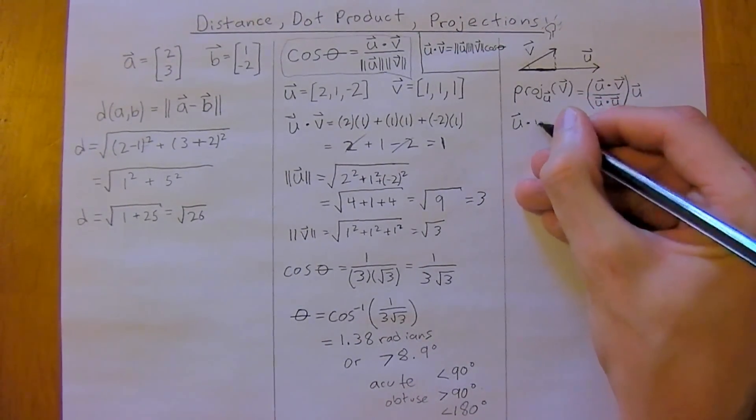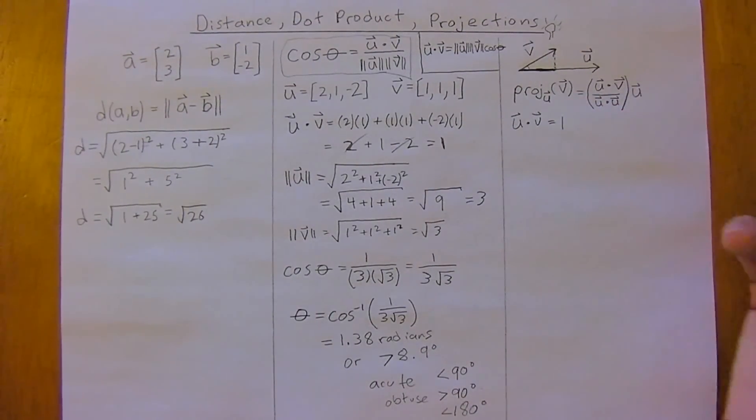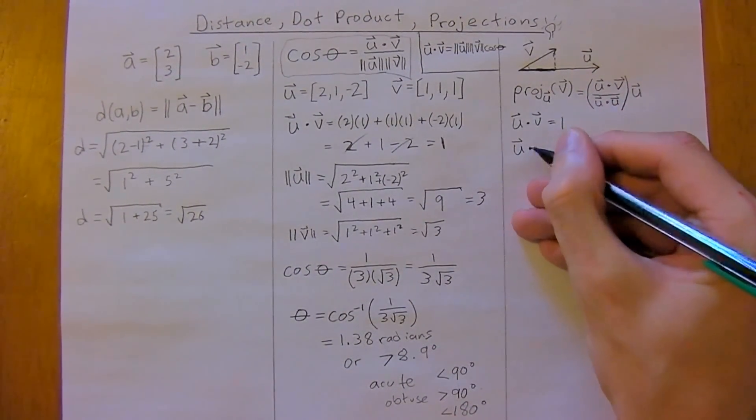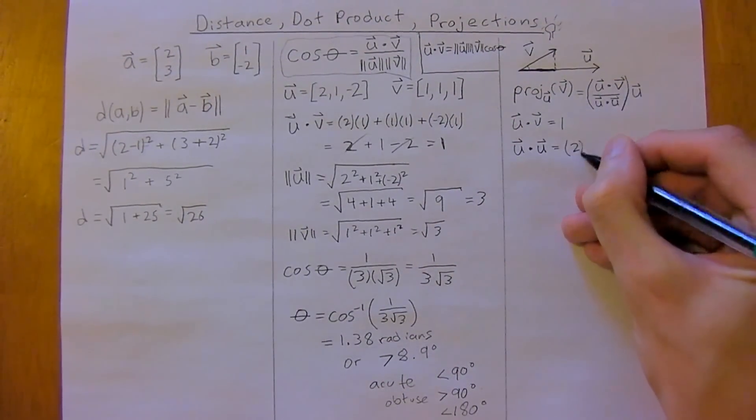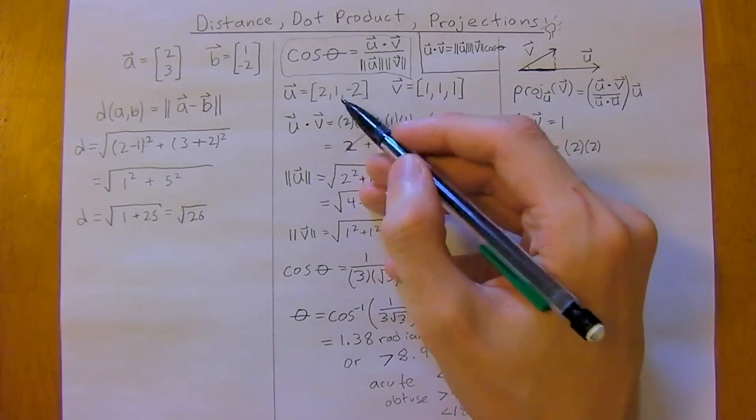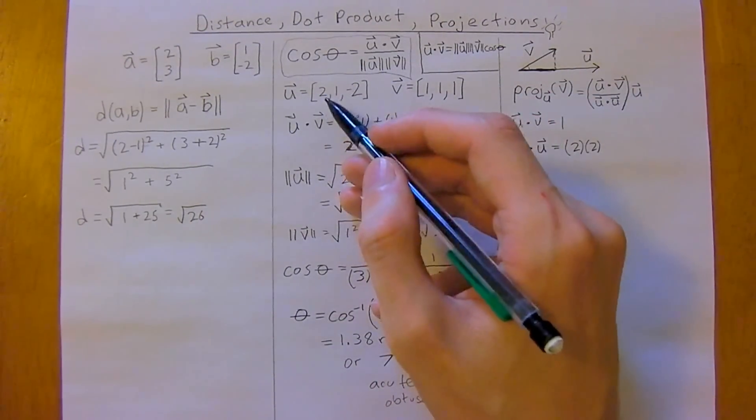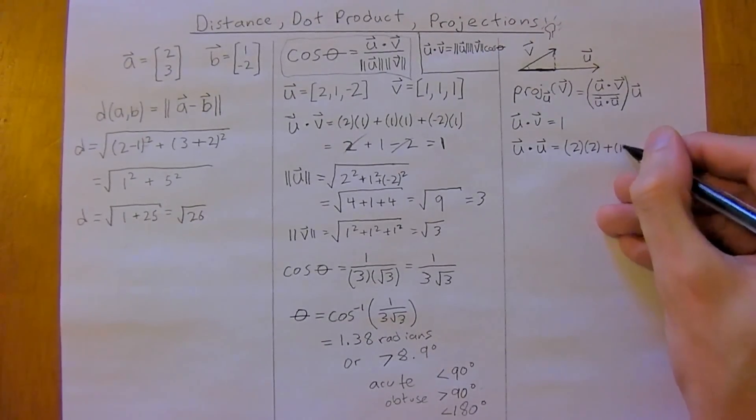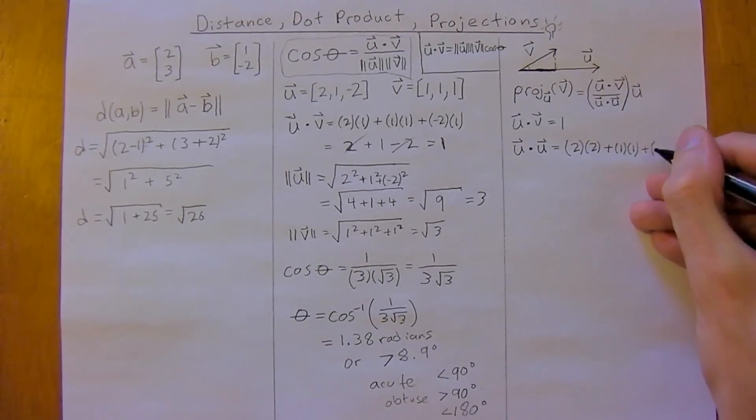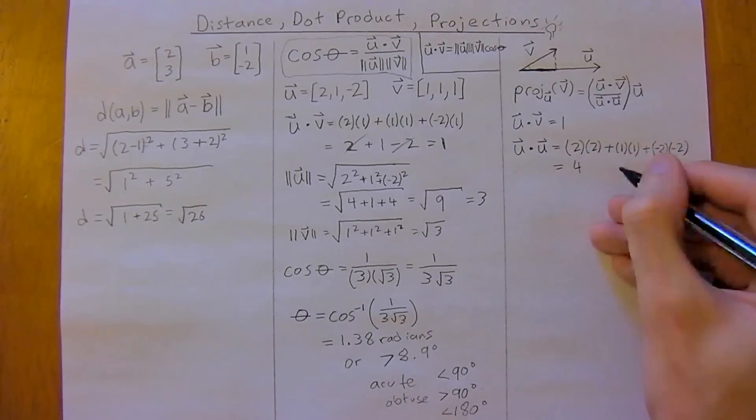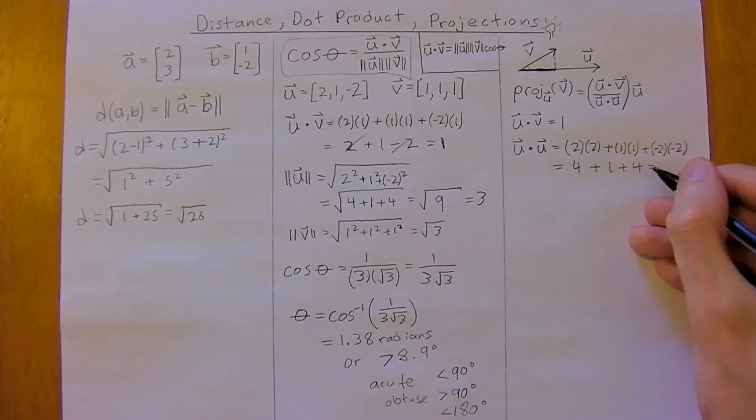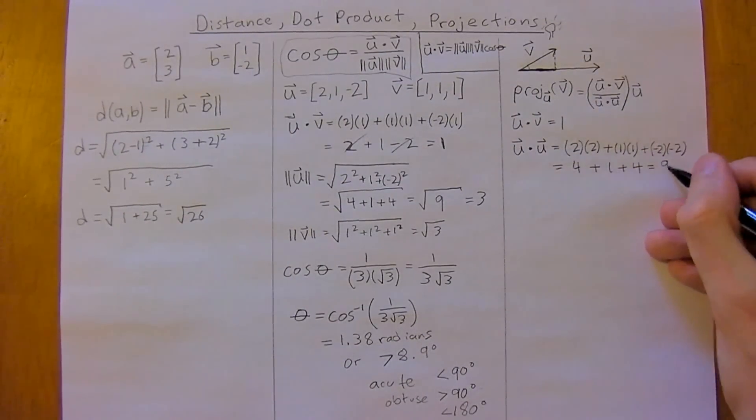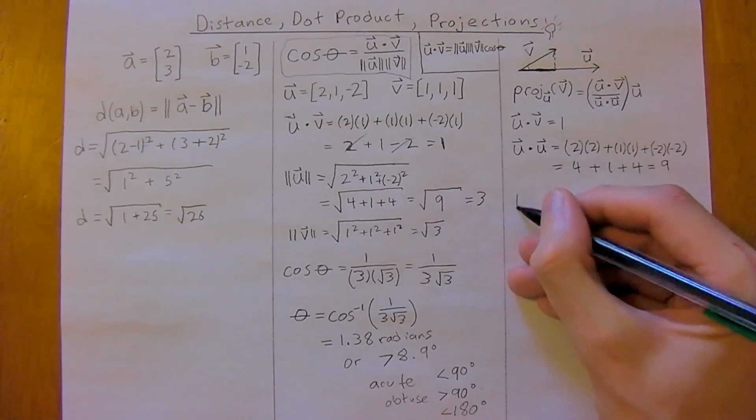so we already know that U dot V equals one. So now we just need to figure out U dot product U, and that's going to be two times two, so we're just dot producting it by itself, plus one times one, plus negative two times negative two, so this is just four, plus one, plus four again. And that's going to be nine,